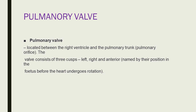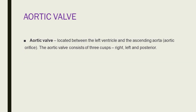The aortic valve is located between the left ventricle and the ascending aortic orifice. It consists of three cusps — right, left, and posterior. The left and right aortic sinuses mark the origin of the left and right coronary arteries. As blood recoils during ventricular diastole, it fills the aortic sinuses and enters the coronary arteries to supply the myocardium.